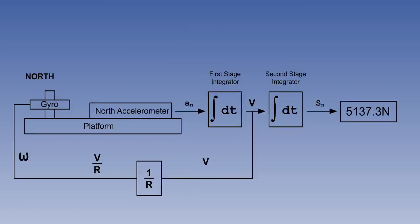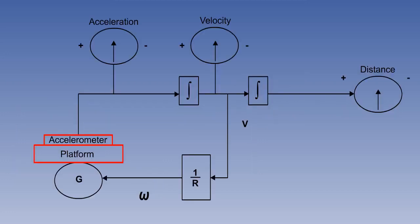The first error we are going to look at is platform tilt. But before we do, we need to modify our diagram slightly. We shall want to see what effect these errors have on acceleration, velocity, and position. The basic pattern is unchanged. We still have an accelerometer on a platform. The output is acceleration. But this time, we've put an imaginary meter in so that we can see what's happening to the acceleration.